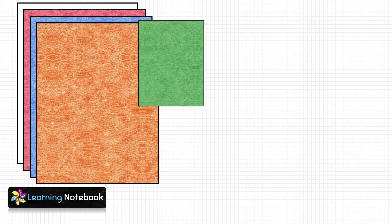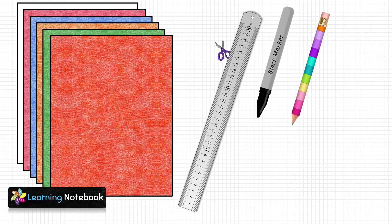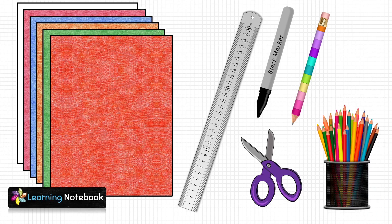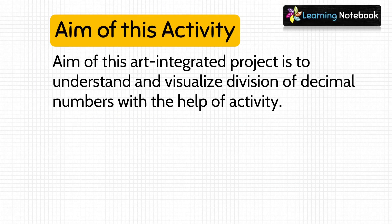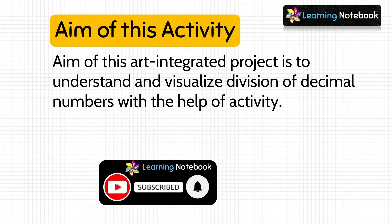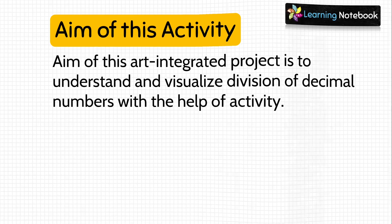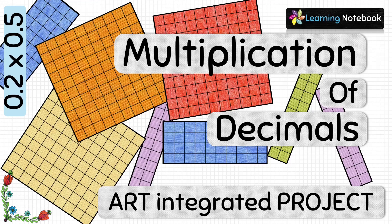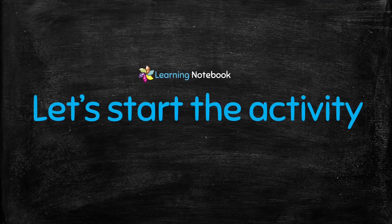For this activity we need a few colorful thick sheets, a ruler, a black marker pen, a pencil, a pair of scissors, and some pencil colors or crayons. The aim of this art-integrated project is to understand and visualize division of decimal numbers. To understand multiplication of decimal numbers, you can refer to our separate video — the link is below in the description box. Now let's start with our activity.